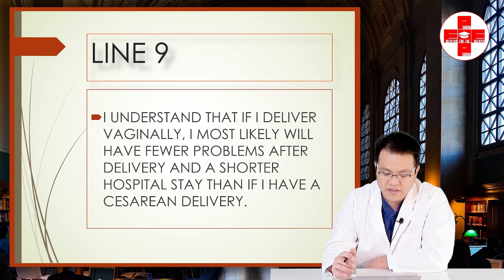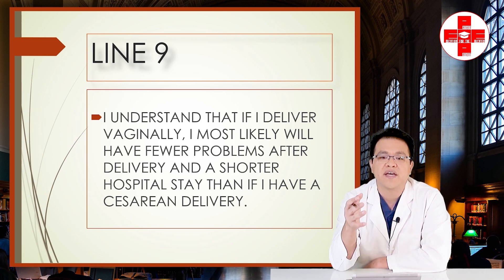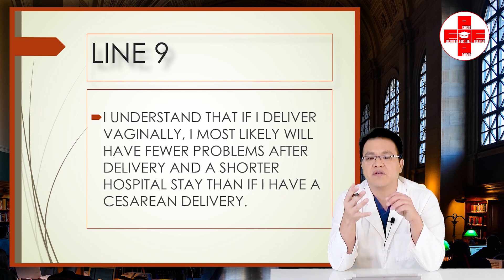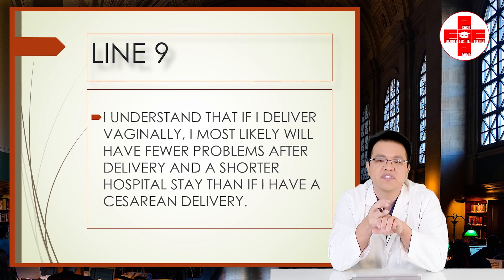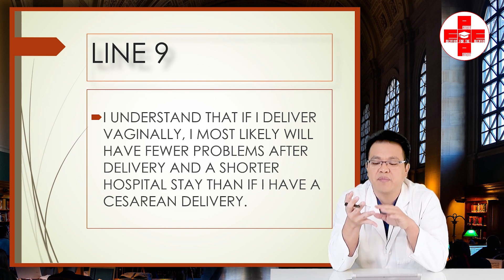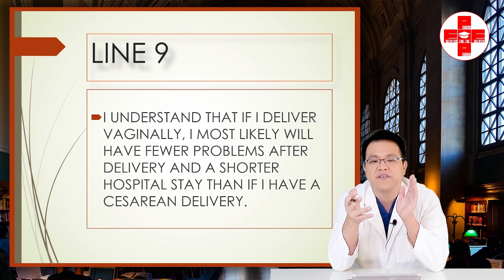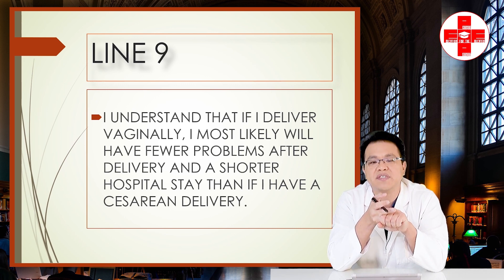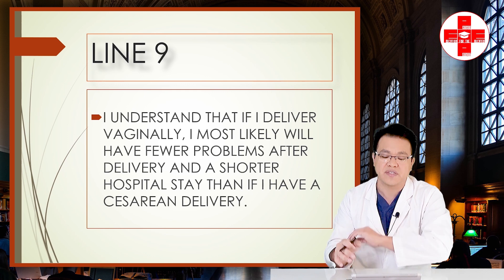Line nine: 'I understand that if I deliver vaginally, I most likely will have fewer problems after delivery and a shorter hospital stay than if I have a cesarean delivery.' If we knew you were going to deliver vaginally with no complications, it would be an easy decision. On average, only 70% of patients who try will deliver vaginally. But if it doesn't work, you wind up with a C-section after labor — in the first or second stage — and those are at much higher risk.